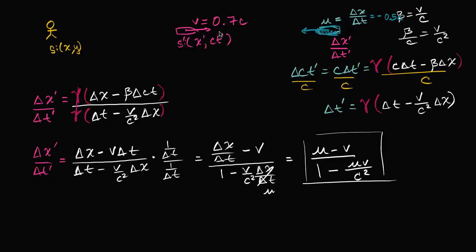From this friend's frame of reference, the s prime frame of reference, the velocity of this character, which is change in x prime over change in t, is going to be this. So what do we have here? So u is the blue velocity in my frame of reference.